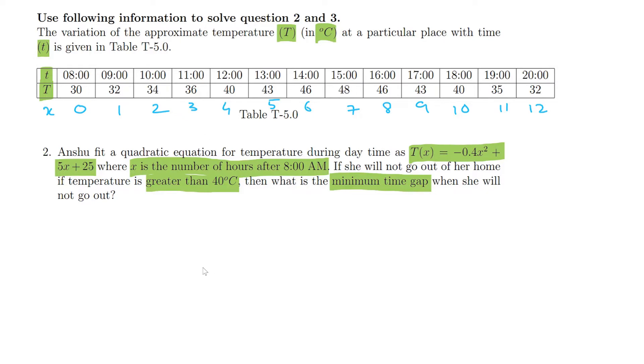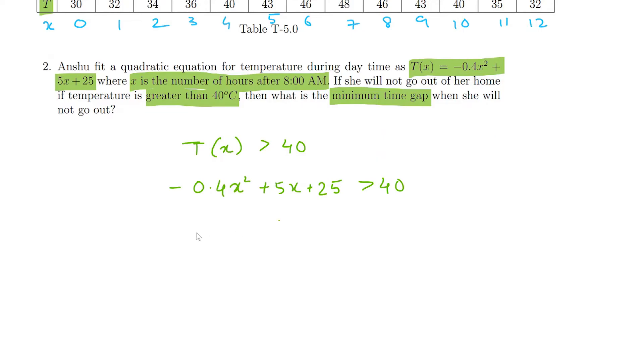We are essentially trying to solve this as T(x) being greater than 40, so that means minus 0.4x squared plus 5x plus 25 is greater than 40. That would indicate that 0.4x squared minus 5x plus 15 is less than 0.